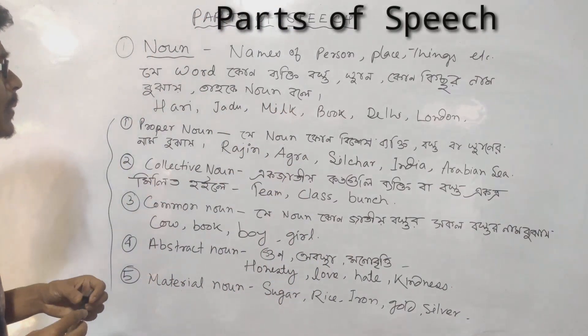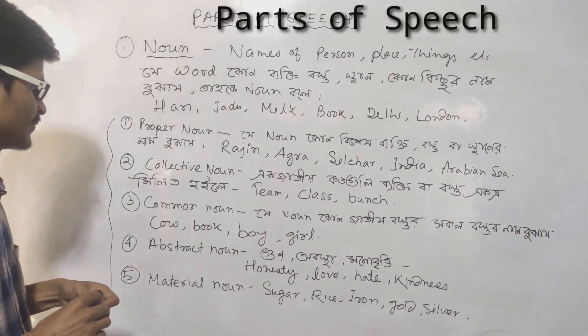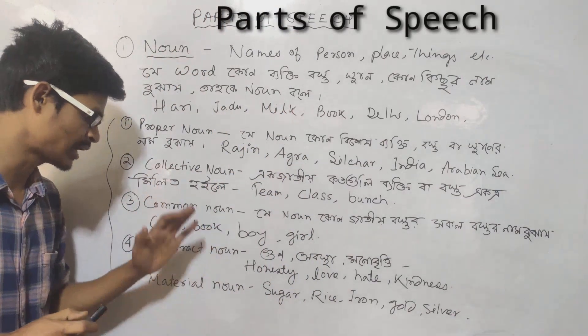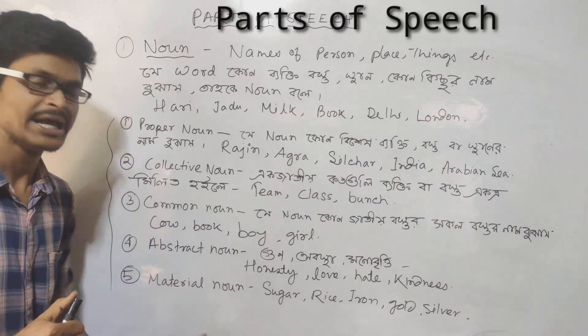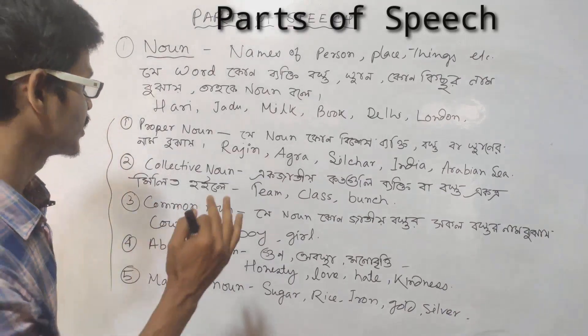The types of noun are: Proper Noun, Collective Noun, Common Noun, Abstract Noun, and Material Noun.